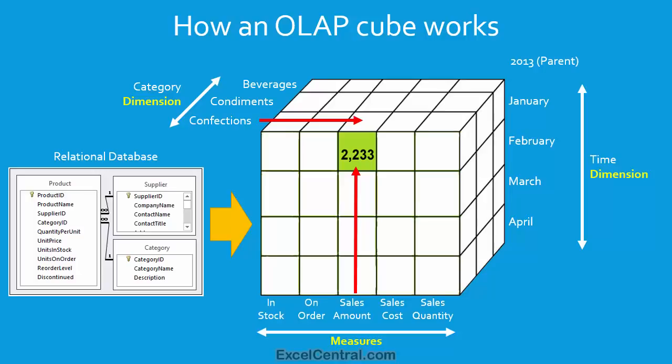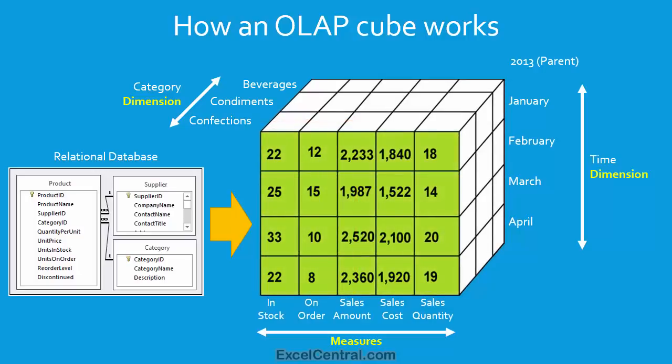Let's now add some more values to the front slice of this OLAP cube. You can see that in the Confections category, I have rolled up totals for January, February, March, and April in the five measures: In Stock, On Order, Sales Amount, Sales Cost, and Sales Quantity. And in order to retrieve any of those values, I'd have to provide two dimensions and one measure.